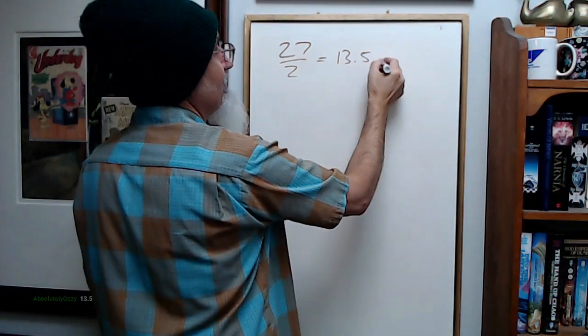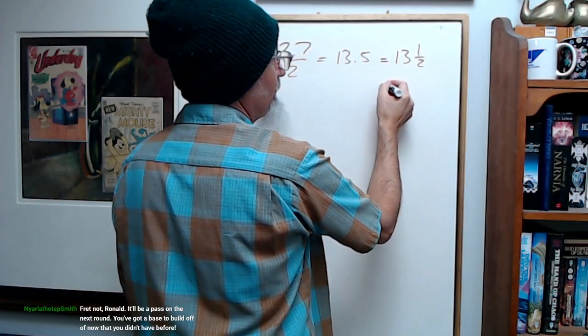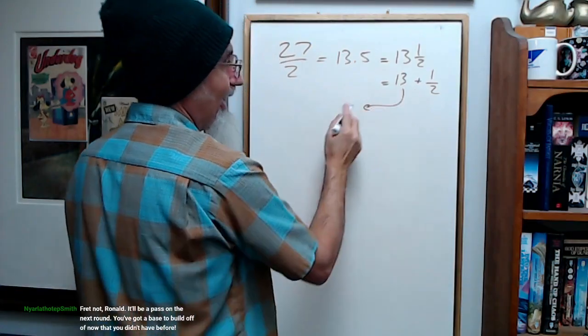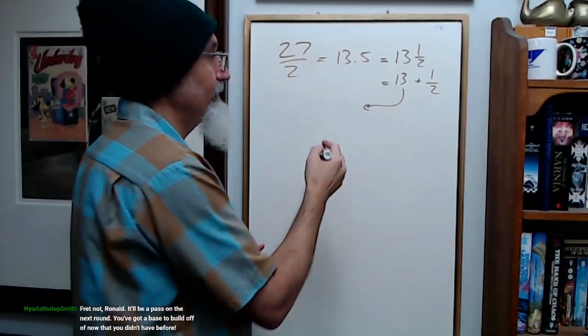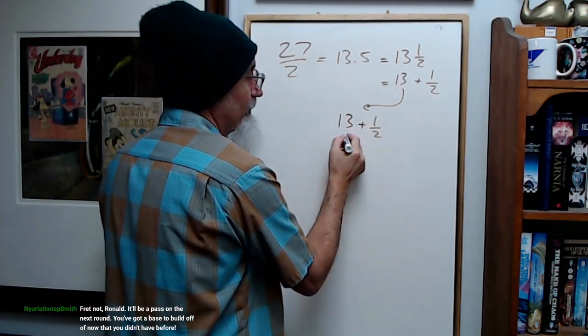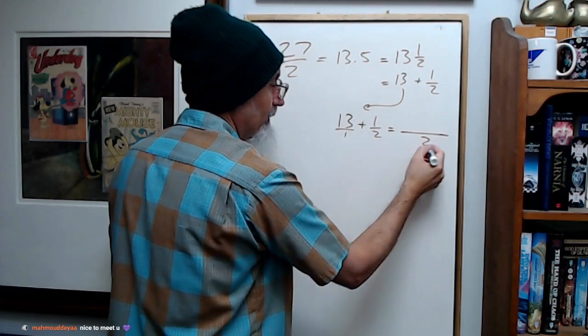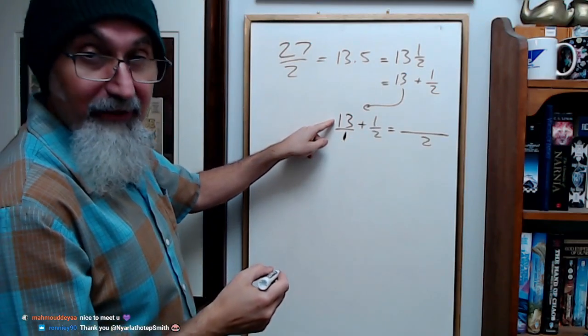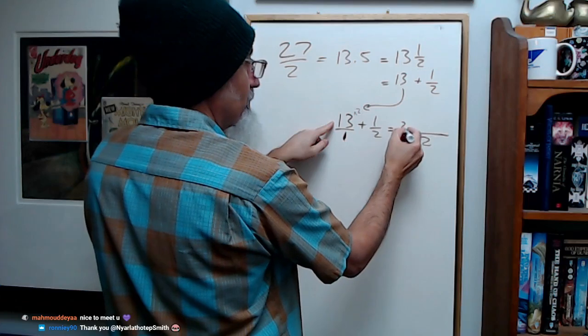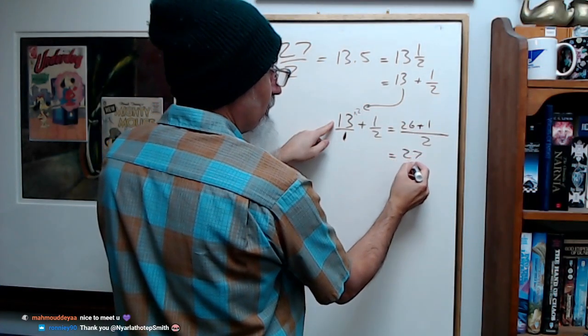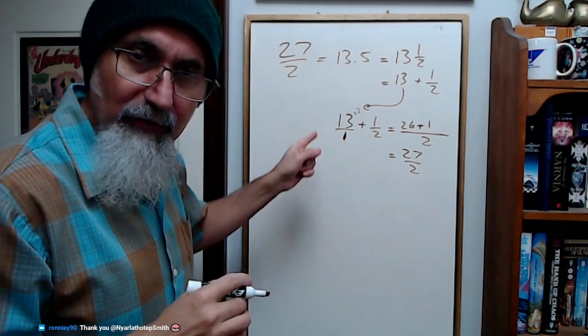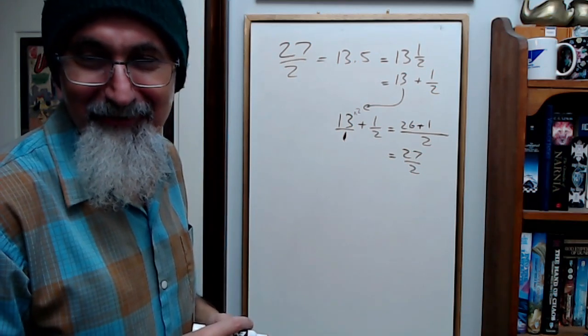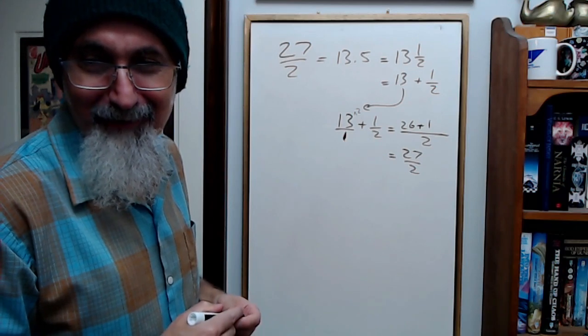So this is 13.5, right? Remember, you can also write 13.5 as 13 and a half. You can also write it as 13 plus 1/2. Because if you're going to add 13 plus 1/2, you're going to go 13 plus 1 over 2, and that's 13 over 1. Common denominator is 2. What did you multiply 1 by to give you 2? You multiply by 2, so you multiply 13 by 2. You multiply this by 2, you get 26 plus 1, and you get back 27 over 2. I just want to clear that up so you see the link, right?